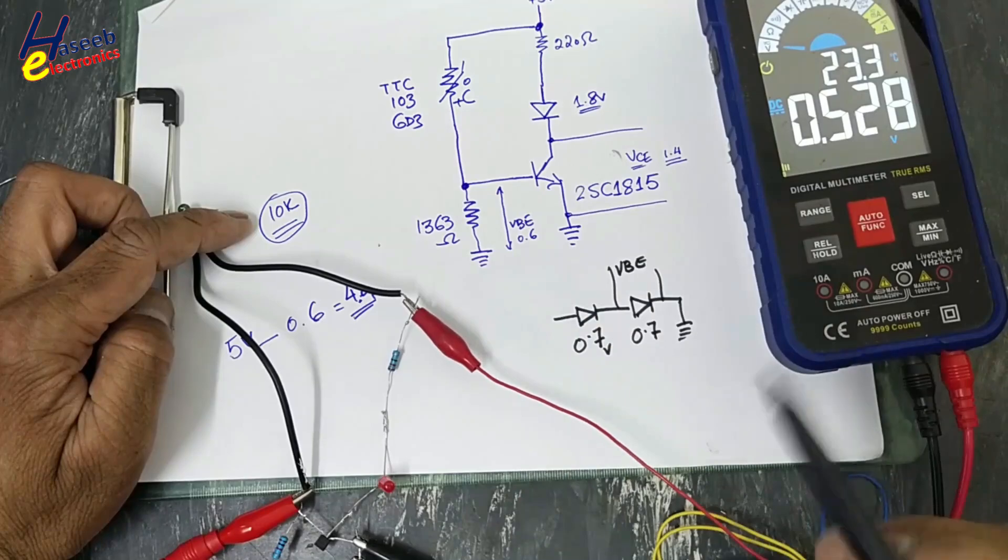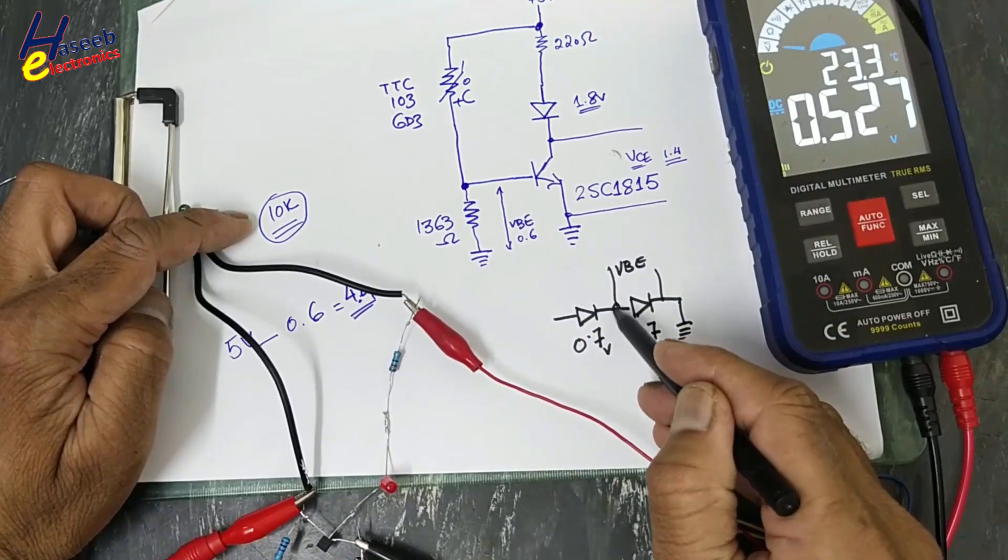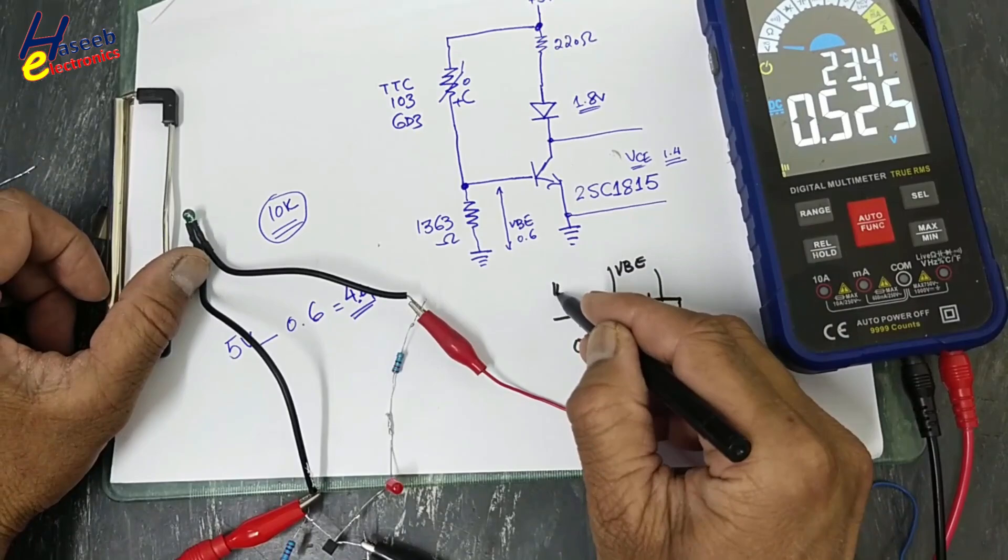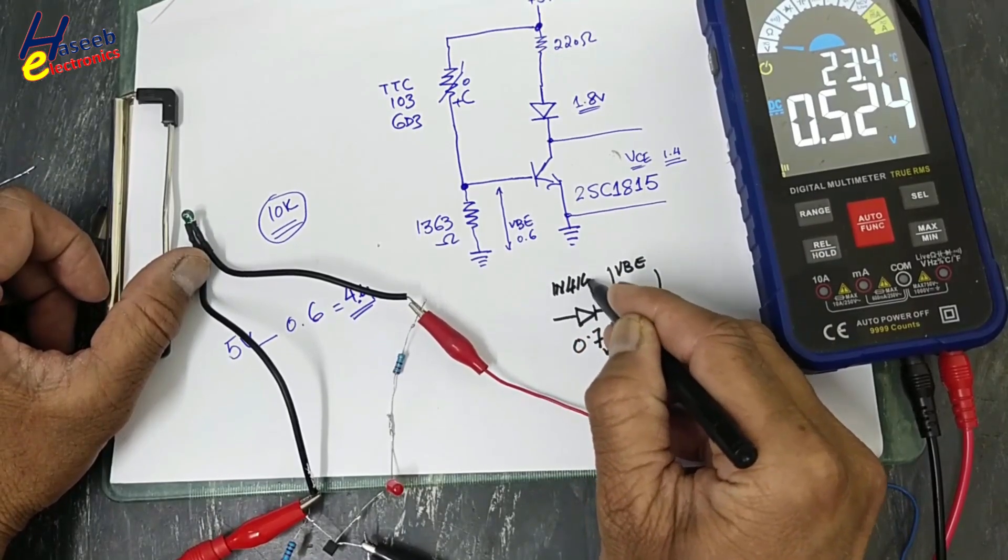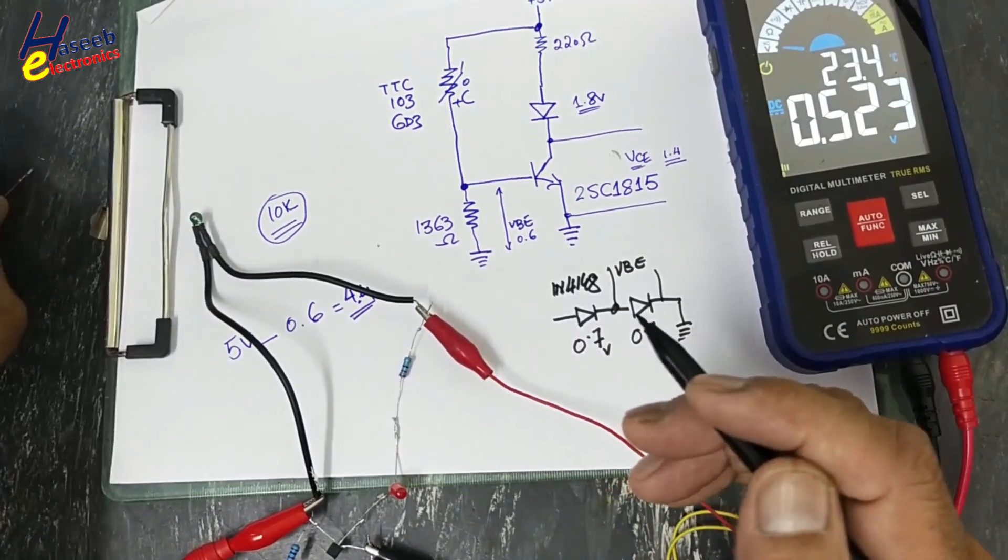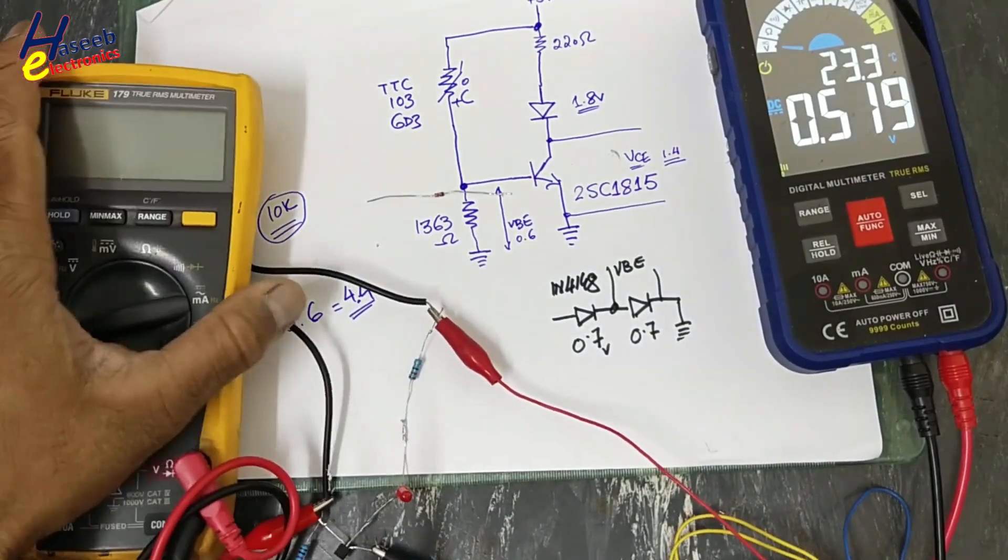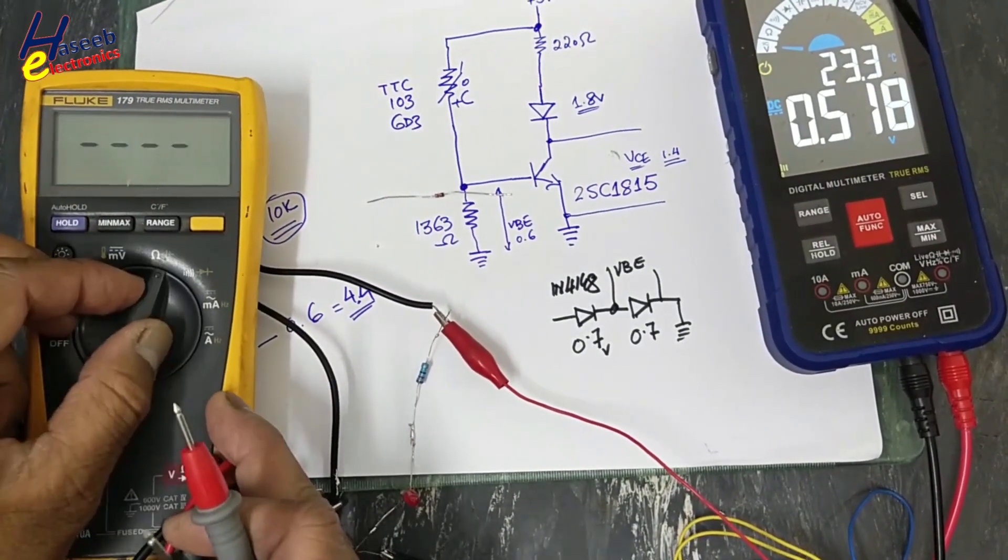If I connect a simple signal diode, 1N4148, that is this diode, we can connect one or two diodes in series, or we can connect a zener.